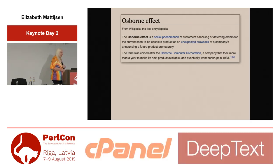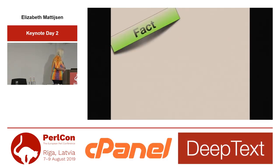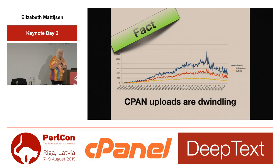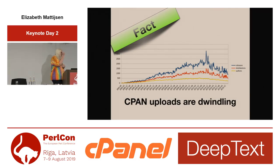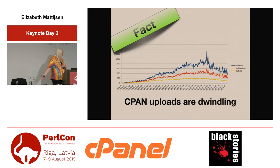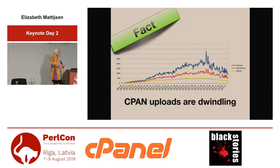If you look at the state of Perl 5 in regard to CPAN uploads — this was recently published by Perlancar — about the dwindling number of CPAN uploads. I think the graphs are actually quite positive, because Perlancar is responsible for about 20% of the uploads currently. And Mohammed, you're responsible for all those pull requests so that authors who wouldn't otherwise upload are still uploading. But yeah, the numbers are going down for sure.